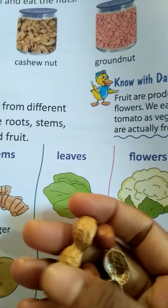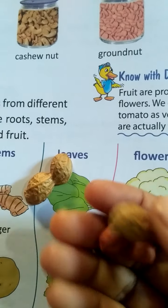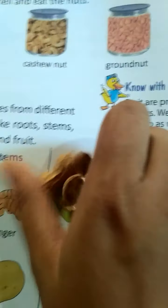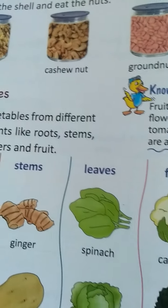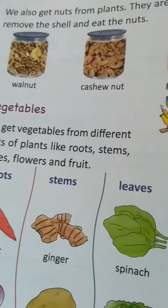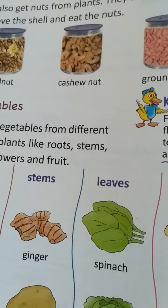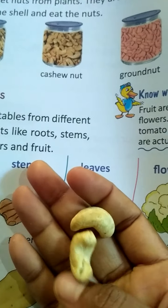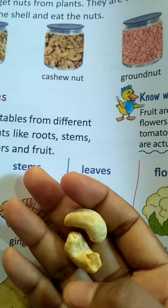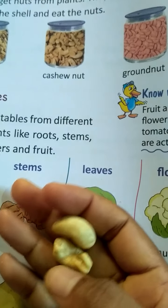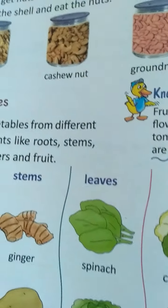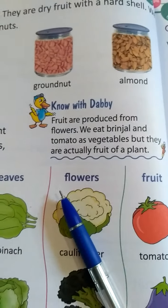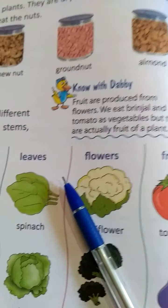This is the hard shell of peanut, and this is the nut inside. Examples of nuts are walnut, cashew nut — that means caju — groundnut, and almonds. Eating nuts gives us energy.